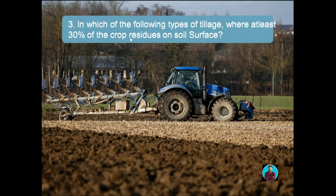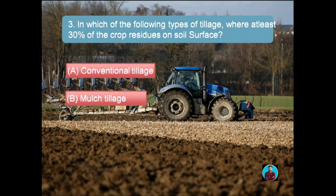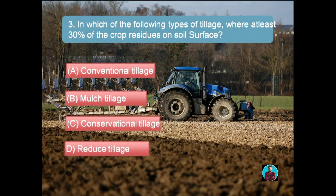Question number three: in which of the following types of tillage are at least 30 percent of the crop residues left on the soil surface? Option A: Conventional tillage, Option B: Mulch tillage, Option C: Conservation tillage, Option D: Reduced tillage. The right answer is conservation tillage. Conventional tillage incorporates or buries most of the crop residues deep into the soil.